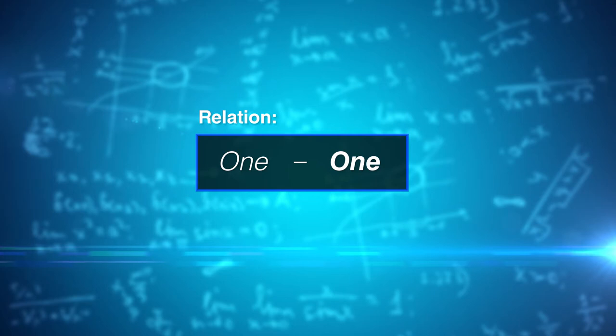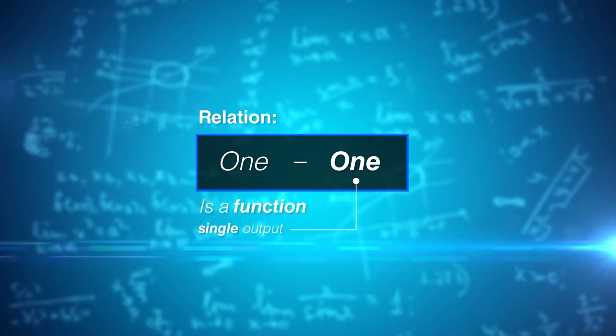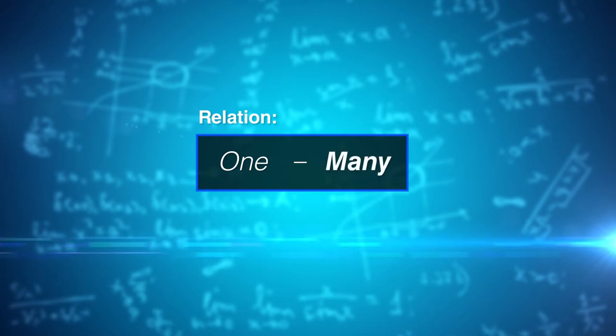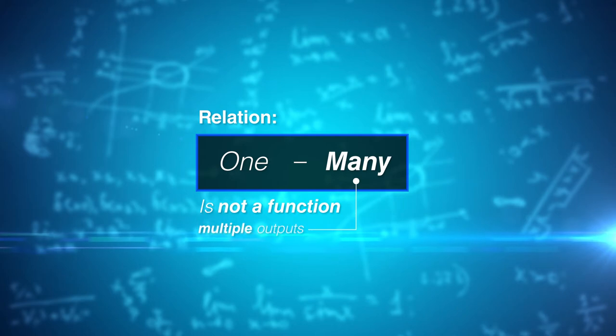The one-to-one relation. This is a function as our input only has a single output. The one-to-many relation. This is not a function as our single input has various or multiple outputs.